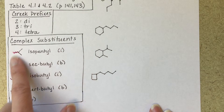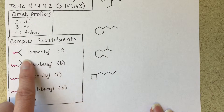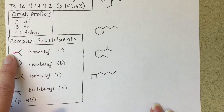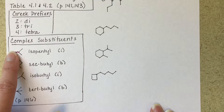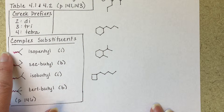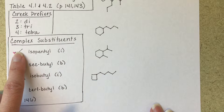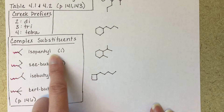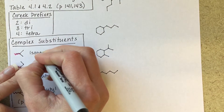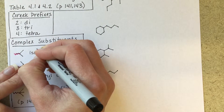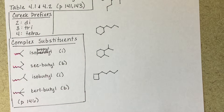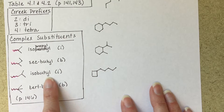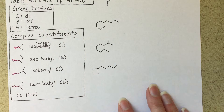There are six complex substituents in your textbook, but you only need to memorize four. The squiggly pink line shows the point of attachment to the parent chain. This is a three-carbon substituent that attaches at carbon number two — its name is isopropyl, alphabetized as an I. Secbutyl is a four-carbon chain attached at carbon number two, alphabetized as a B. Isobutyl is also alphabetized as an I, and tertbutyl is alphabetized as a B.